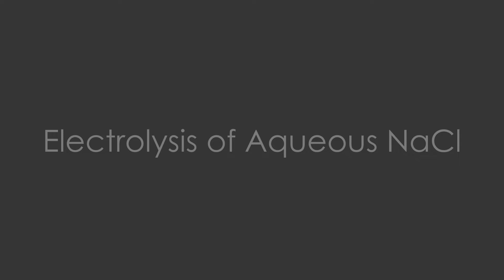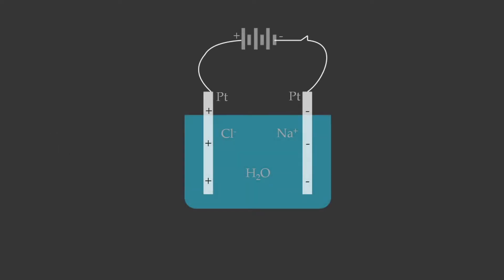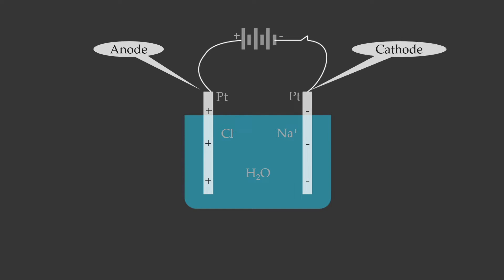Here is an electrolytic cell for the electrolysis of an aqueous solution of sodium chloride. The electrodes are platinum. The anode is connected to the positive terminal and the cathode is connected to the negative terminal. The reaction at the anode is oxidation and the reaction at the cathode is reduction. Now we need to select the ions or reagents that will undergo oxidation and reduction at the respective electrodes.